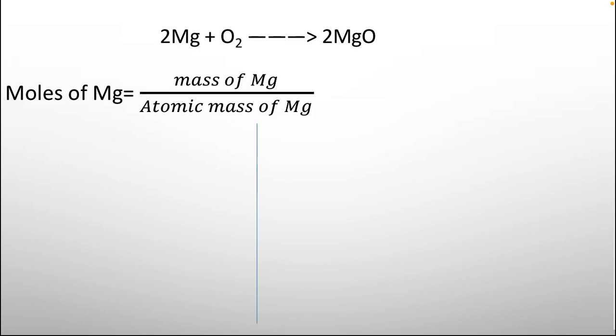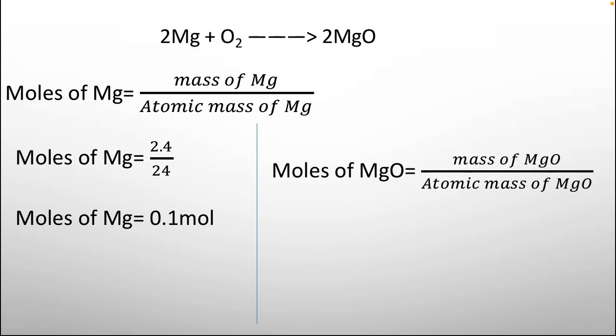According to that, we are going to do some explanations or calculations. So, this is the reaction that magnesium is reacting with oxygen. And there are 2 moles of magnesium, which is reacting with oxygen gas, will give you 2 moles of magnesium oxide. This is the balanced equation. So, first of all, we are going to find moles of magnesium, and the formula is mass of magnesium divided by atomic mass of magnesium. Mass of magnesium is already given, that is 2.4 divided by 24. The answer we get is 0.1 mole.